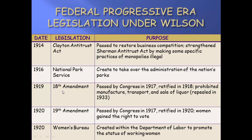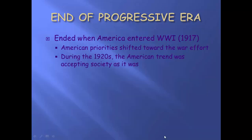The 18th Amendment: no booze — can't manufacture it, transport it, sell it, nothing. The 19th Amendment: women finally gained the right to vote. And then you have in the 1920s the Women's Bureau, created within the Department of Labor to promote the status of working women and make sure there were clear, good working conditions for women.